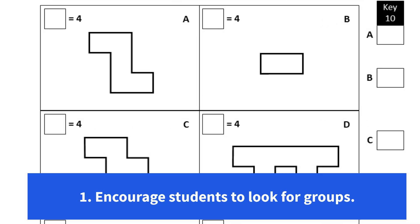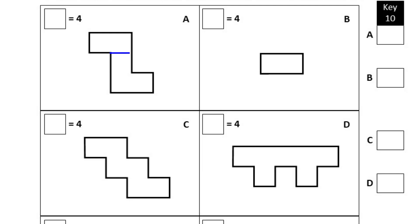The first tip is to encourage your students to look for groups. In this example, the simplest set of groups is 5 groups of 4. However, you may have some students who think about this very creatively. They may see 2 groups of 8 and 1 group of 4.